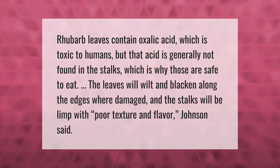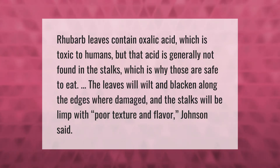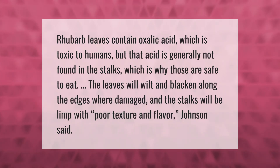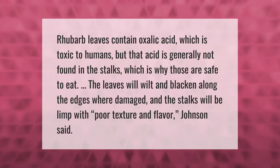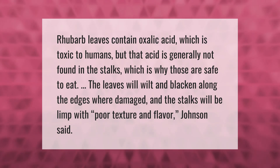Rhubarb leaves contain oxalic acid, which is toxic to humans, but that acid is generally not found in the stalks, which is why those are safe to eat. The leaves will wilt and blacken along the edges when damaged, and the stalks will be limp with poor texture and flavor, Johnson said.